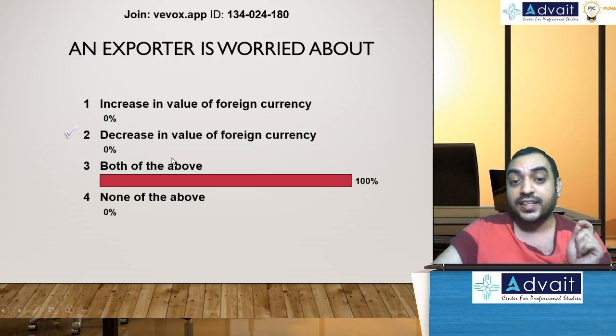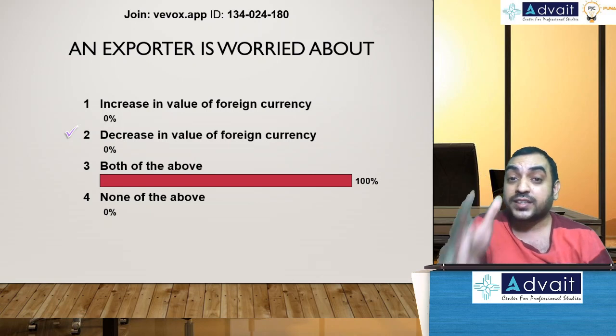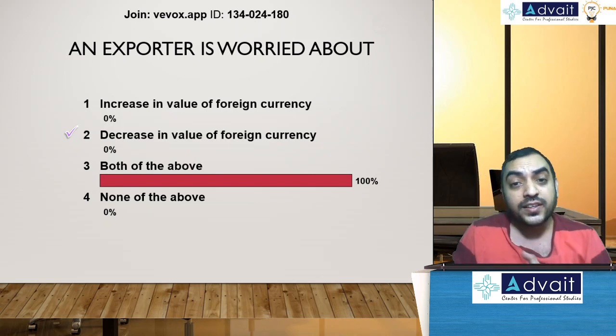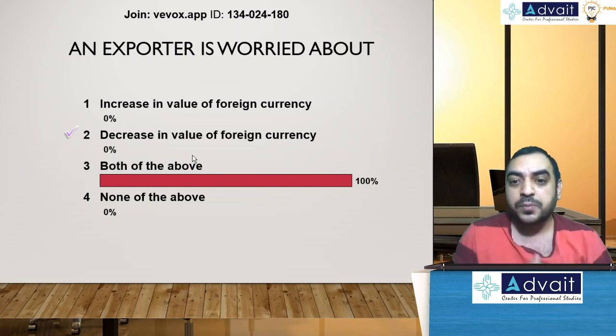The right answer is here, decrease in value of foreign currency. Then I can tell you, see, most people think like this, but actual answer is this. So I can do a quick analysis. Interaction will be there, you can participate. Live voting will be there. These things are part of only online classes, will not be part of the Google Drive.